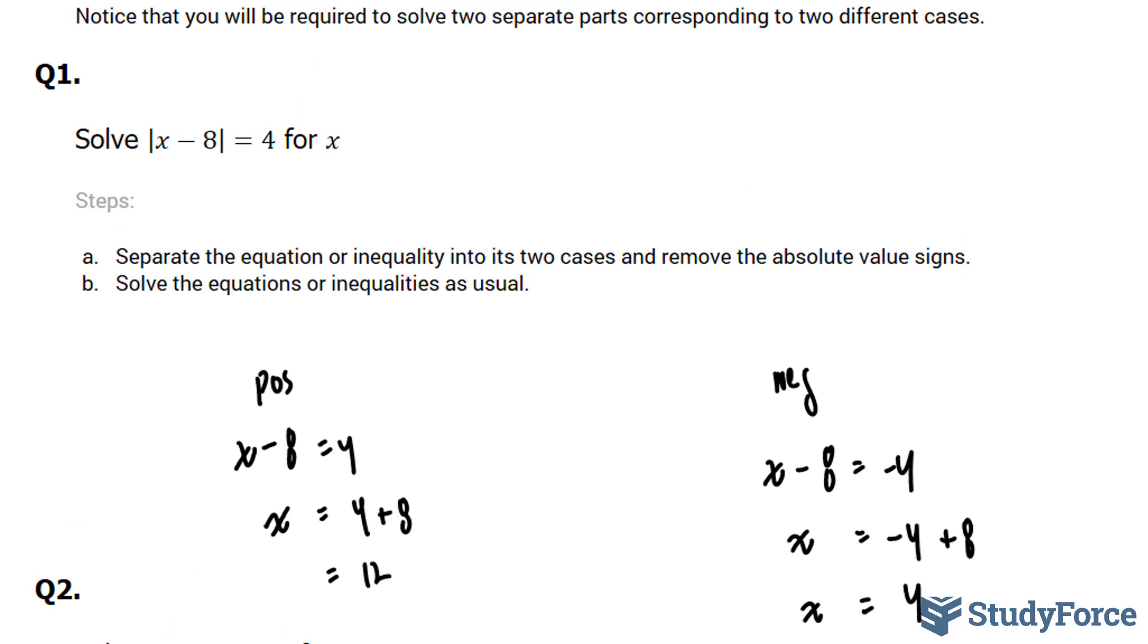So in this particular example, this is satisfied when x is equal to 12 and x is equal to 4. And to prove that, all you have to do is substitute these two values into the equation, and you will always get 4.